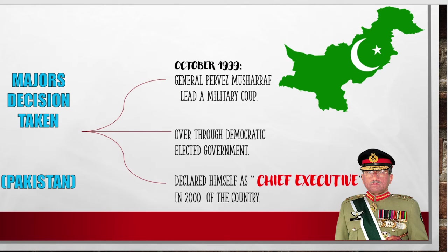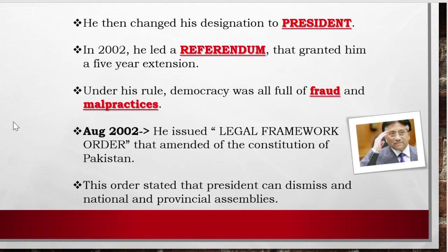Now we'll talk about Pakistan and Pervez Musharraf. You may not have come across this name, but in a very dramatic way this man, from being a general, declared himself to be the president of the country. In October 1999, General Pervez Musharraf led a military coup. He was the head of the military and inspired military personnel to join him. He overthrew the democratically elected government, and declared himself Chief Executive of the country in 2000.